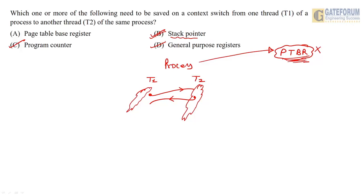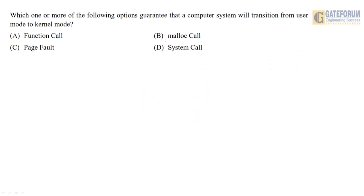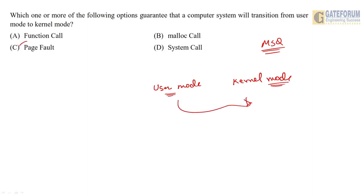The next question is also an MSQ — multi-select question: which one or more of the following guarantees that the computer system will transition from user mode to kernel mode? Whenever there is a page fault, the system goes from user mode to kernel mode. Similarly, for a system call, the system goes from user mode to kernel mode. For a function call or a malloc call, it is not guaranteed that the system will switch modes. So the correct answer is C and D.